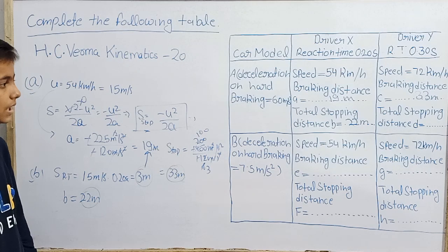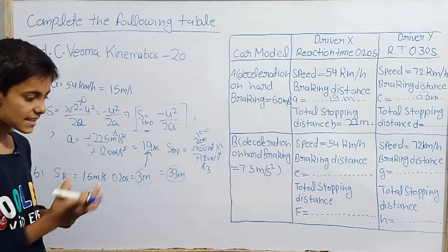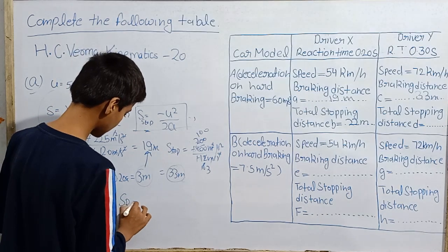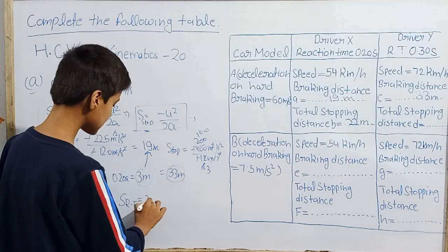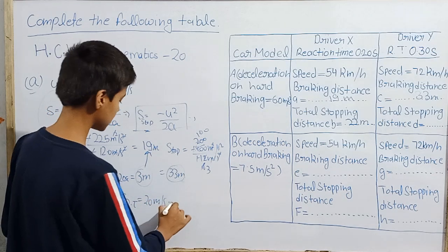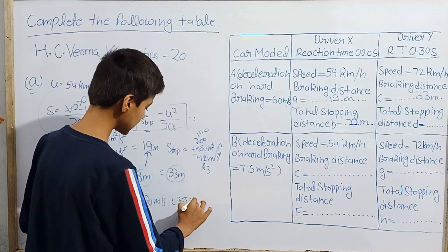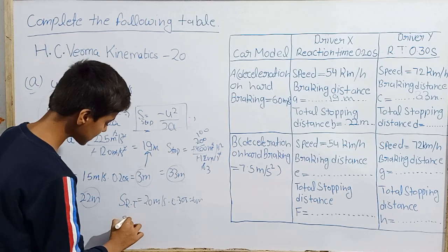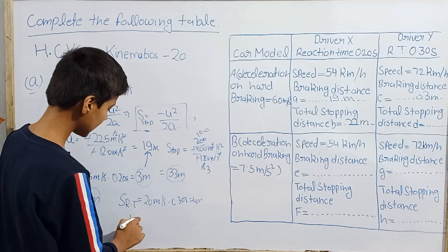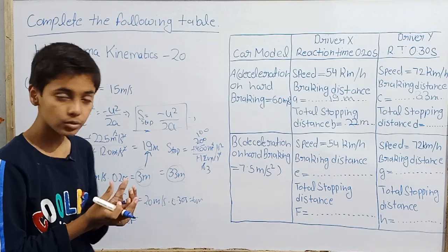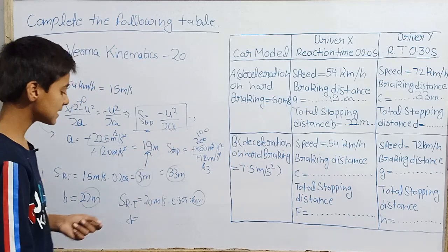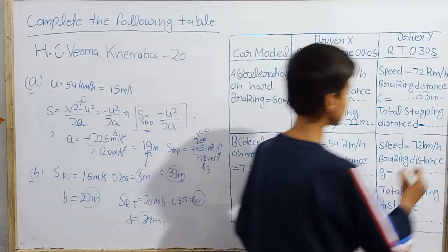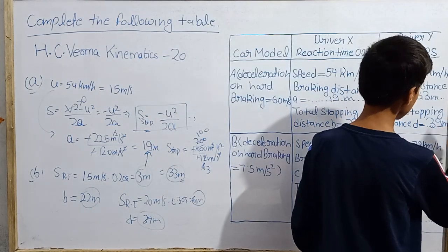Total stopping distance D: reaction time for driver Y is 0.30 seconds at 20 m/s, so distance during reaction time = 20 × 0.30 = 6 meters. Total stopping distance = 6 + 33 = 39 meters. So value D is 39 meters.